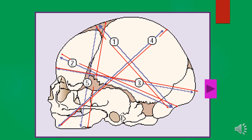The next diameter is called the submental bregmatic. This is from the chin to the center of the bregma. Then the last diameter is called the submental vertical, which is about 11.5 centimeters, measured from the point where the chin joins the neck to the highest point on the vertex.